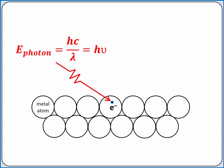Looking at our photoelectric effect, our binding energy is keeping the electron in the metal. If the energy of our photon is greater than the binding energy, then we'll eject the electron.